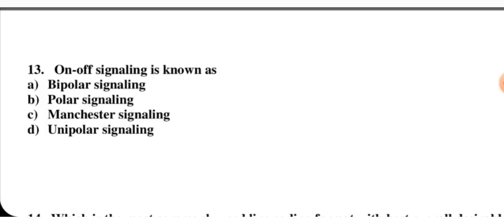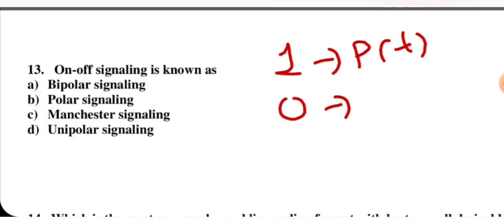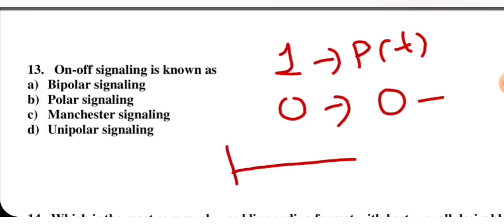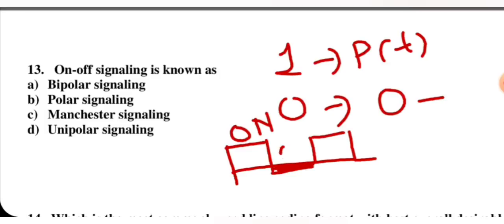On-off signaling is known as which type of coding? On-off means: if 1 is transmitted, a pulse is transmitted; if 0 is transmitted, no pulse is transmitted (DC level). So 1 means on and 0 means off — this is called unipolar signaling, so D is correct.